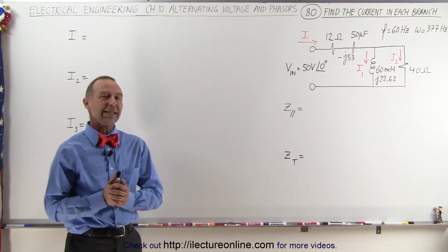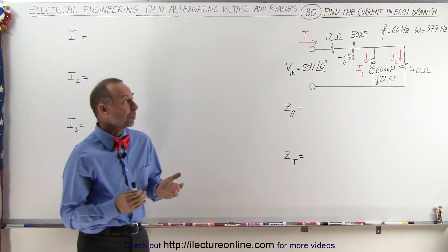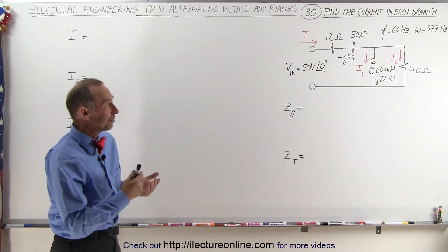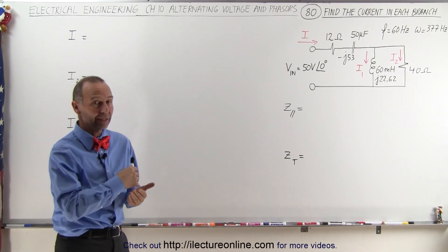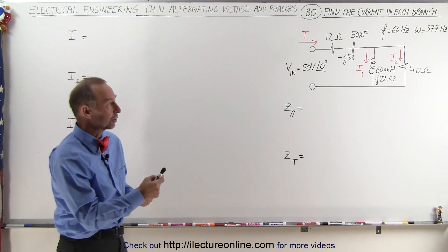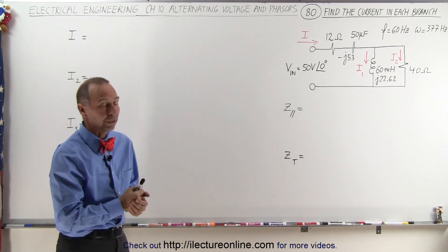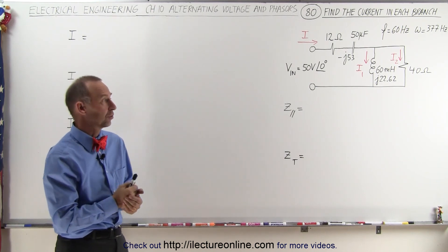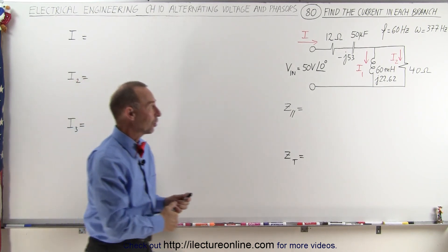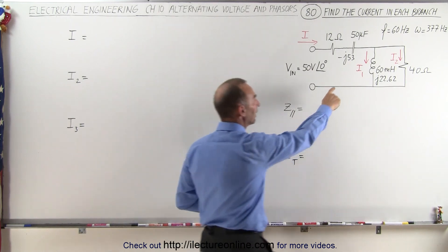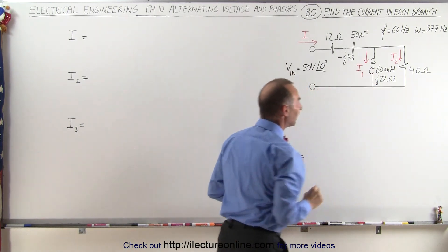Welcome to iLectronLine. In this example, we're going to try to find the current in the entire circuit and the current through each of the two parallel branches. Those are called I1 and I2.